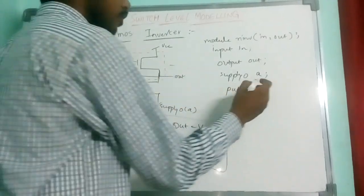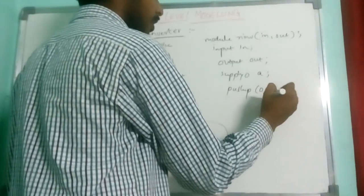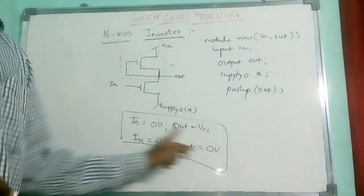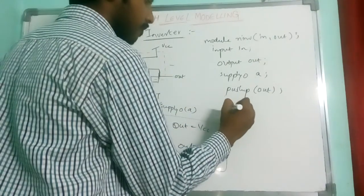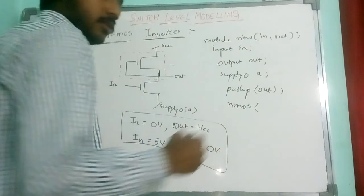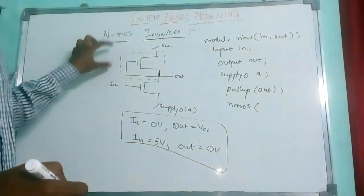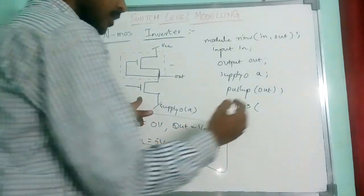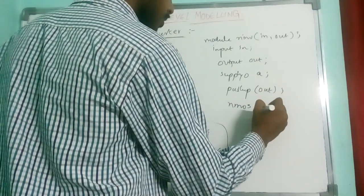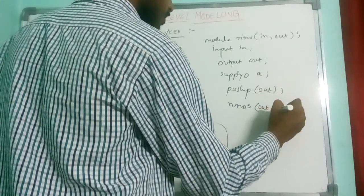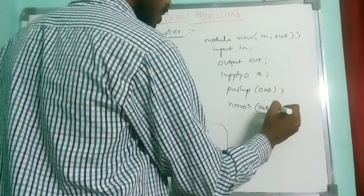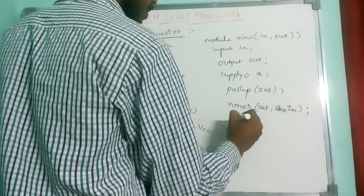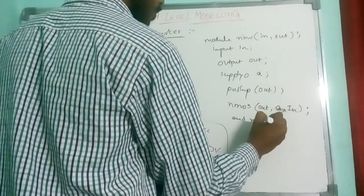Now the first case, this acts as a pull-up network, so I use the pull-up network here directly. For NMOS, for this thing, output is OUT, supply 0, that means there is A and control is IN and model.